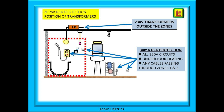Regarding RCD protection: all 230 volt circuits in a bathroom or room with a shower must be 30 milliamp RCD protected. Underfloor heating should also have 30 milliamp RCD protection, and any cables that pass through the bathroom or room with a shower that are in Zones 1 or 2 but are not used in those rooms must also be 30 milliamp RCD protected. Where SELV or PELV is in use, the 230 volt transformer that supplies the extra low voltage must be sited outside the zones, and only the cables at extra low voltage should be in the zones.